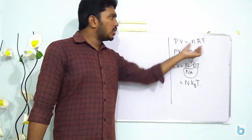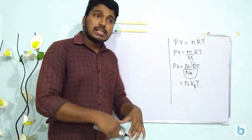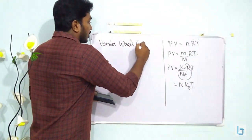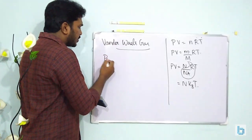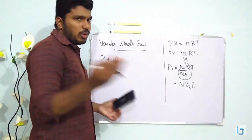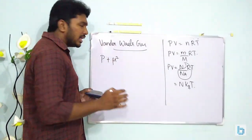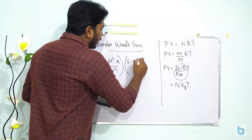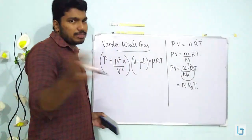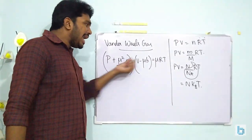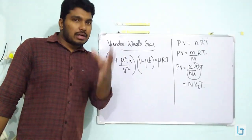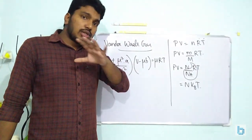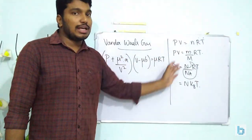A correction to the ideal gas equation gives the real gas equation, the van der Waals equation: (P + μ²A/V²)(V − μB) = μRT, where μ is the number of moles and A and B are constants. Van der Waals applied a correction factor to the ideal gas equation to account for real gases, which deviate from ideal behavior and do not obey all gas laws.